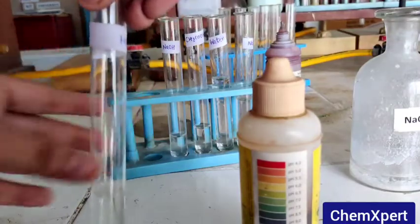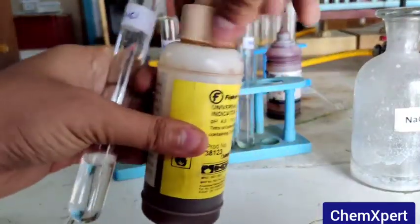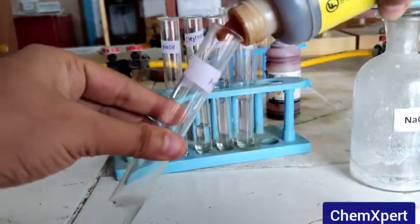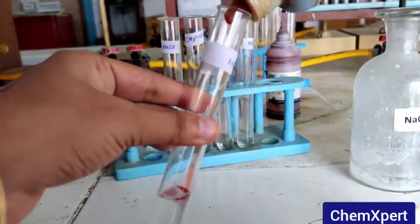For example, in the first case in the HCl, when we add this universal indicator then this solution turns dark red, which indicates that it is a strong acid.